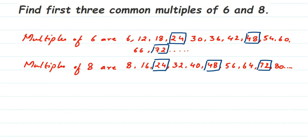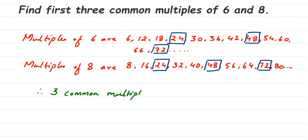You have to keep finding multiples until you reach the required number of common multiples. Here they asked for three, so we're done. If they asked for five, you'd continue further. Therefore, the three common multiples of six and eight are twenty-four, forty-eight, and seventy-two. I hope this question is clear — if you have any other questions or doubts, you can drop a comment. Thank you so much for watching.